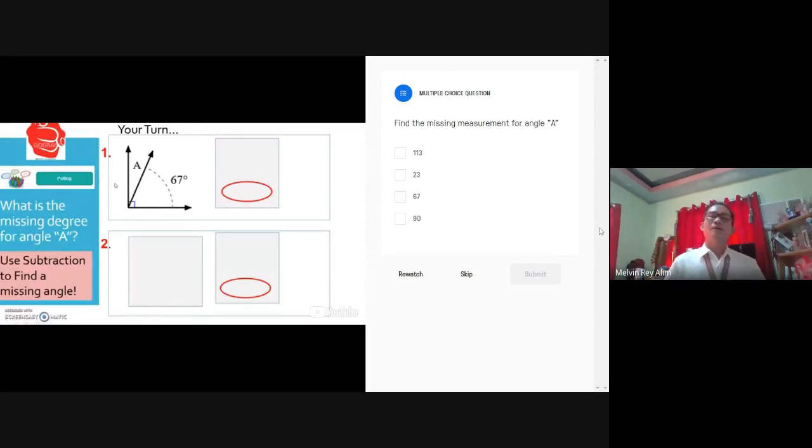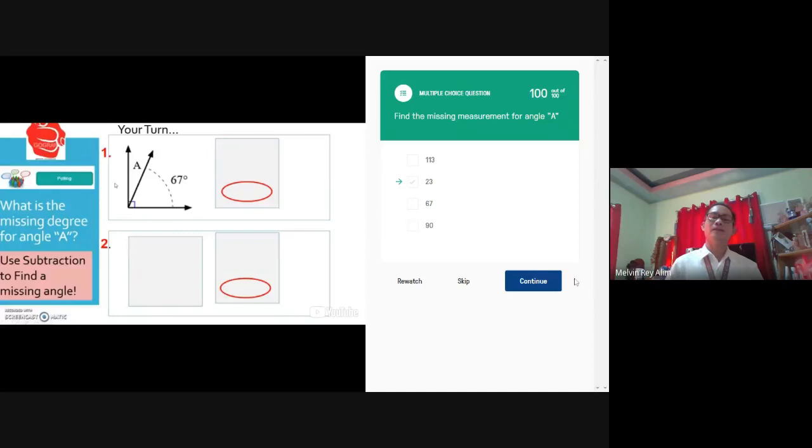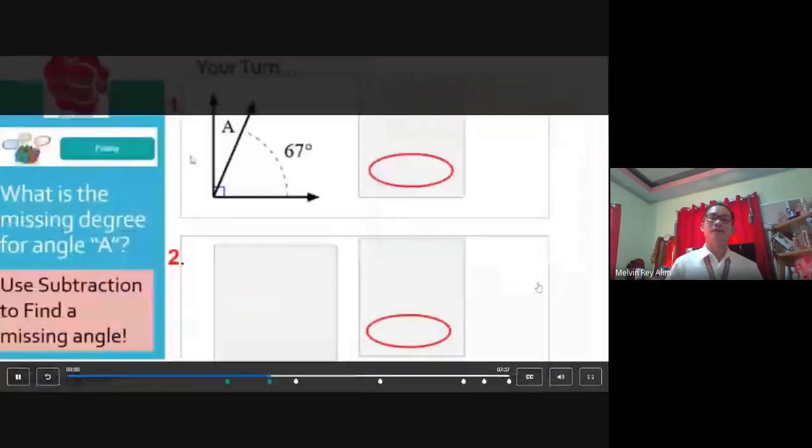Okay, the second question is find the missing measurement for angle A. Choices 113, 23, 67, 90. Your answer is 23. Submit, then with a C, so check, then continue.